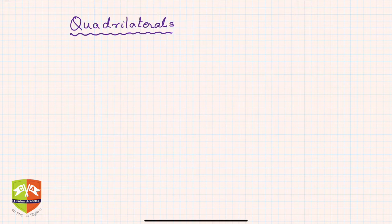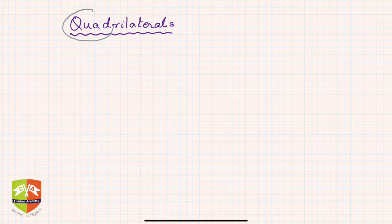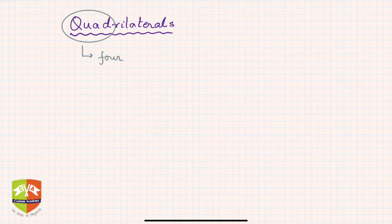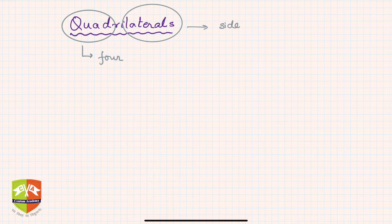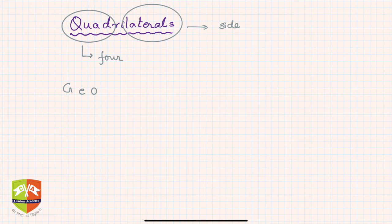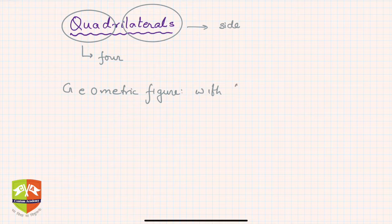We will understand what the word quadrilateral means first, then start with basic definitions and go into its features. The word quadrilateral is made up of two basic words: one is 'quad,' which means four, and the other is 'lateral,' which means side. So basically, a quadrilateral is a geometric figure with four sides, and it is a closed figure.